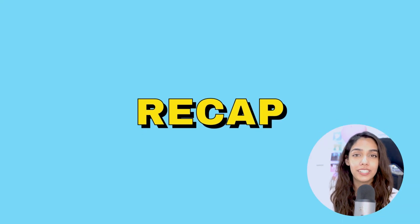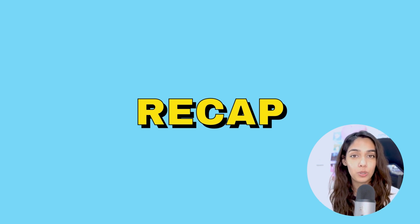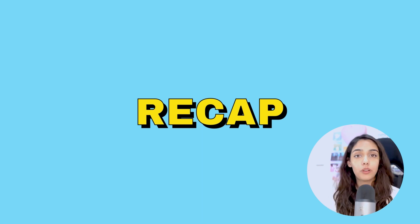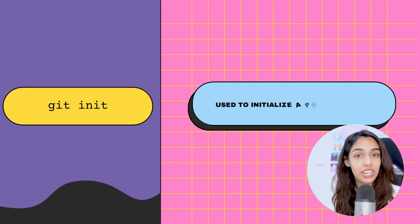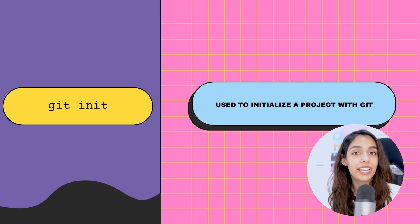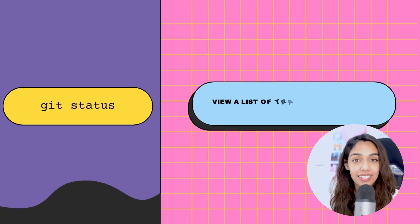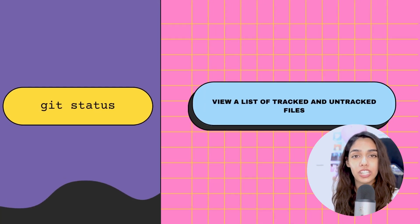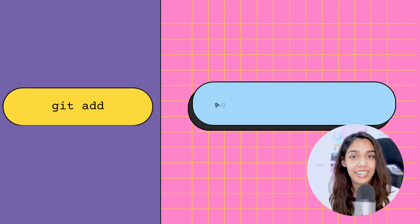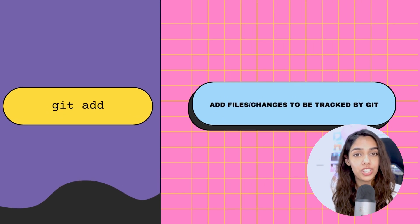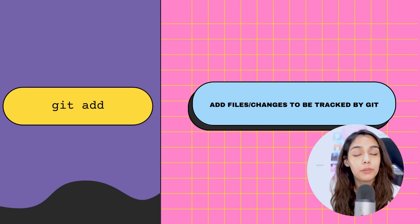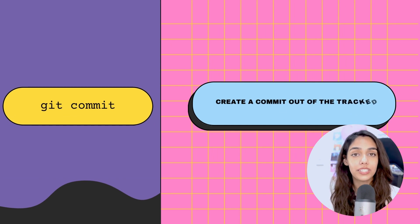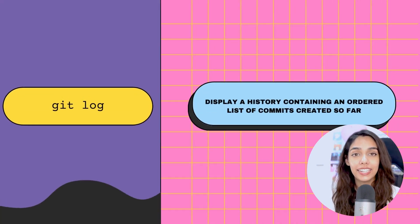So in a matter of a few minutes, we've covered a bunch of new commands. Let's do a quick recap. First, git init is used to initialize a Git repository and enable Git on a new project. Second, git status displays the status of changes made to the project at the current time. Third, git add takes those changes and tells Git you want them as part of a commit. Finally, git commit creates the commit with a description, and git log displays your list of commits.